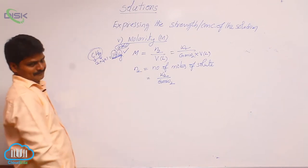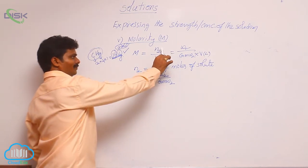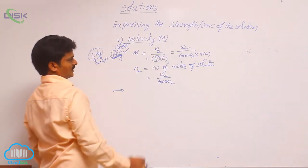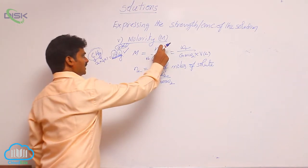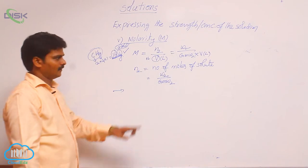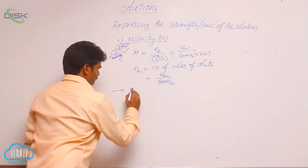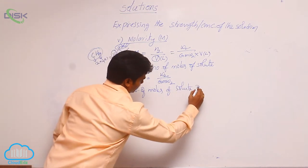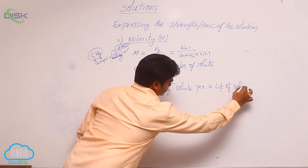How to define molarity? From the formula itself, we define it. It is the number of moles of solute when V is taken as 1 liter. Then, number of moles of solute is nothing but molarity. That means, number of moles of solute present in 1 liter of solution is called molarity. So, molarity definition is: number of moles of solute per liter of solution.